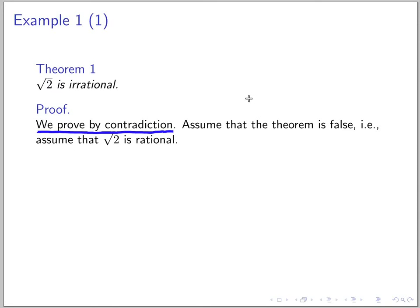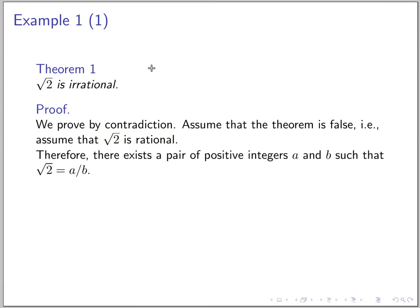To make it clear because proof by contradiction is very confusing we usually have to state it explicitly that we will use this technique. So we prove by contradiction so we assume that theorem is false that is we assume that square root 2 is rational. From that because it's rational there exists a pair of positive integers a and b such that square root 2 can be written as a over b.